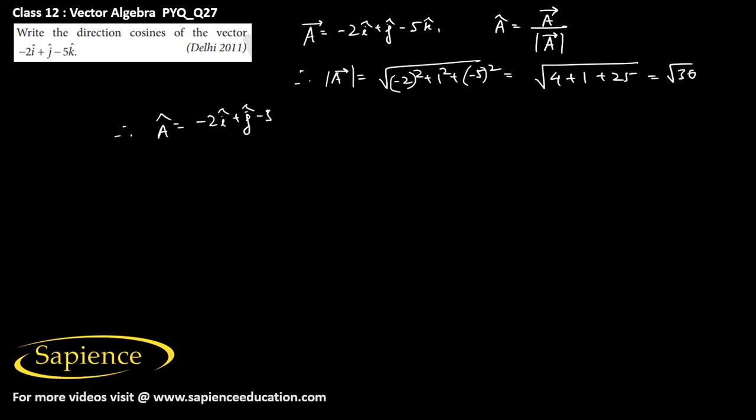So now therefore, A cap will be equal to -2i cap plus j cap minus 5k cap divided by root over 30. So this will be -2 by root 30 i cap plus 1 by root 30 j cap and then minus 5 by root 30 k cap.